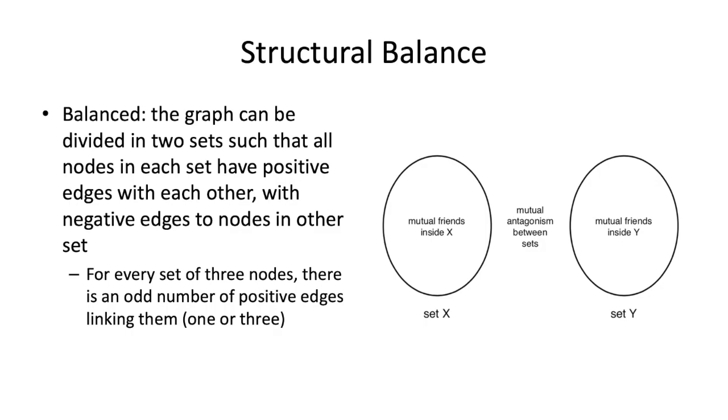We don't see any tension as a researcher in saying there are all these people holding together in set X, all these people holding together in set Y, and they're basically fighting together between the two sets. That is still balanced. One of the main ways we can do this, if we're drawing the actual edges, if we take three nodes, there needs to be an odd number of positive edges linking them.